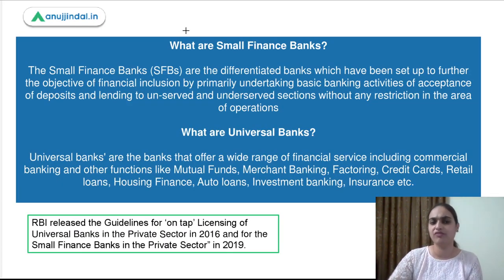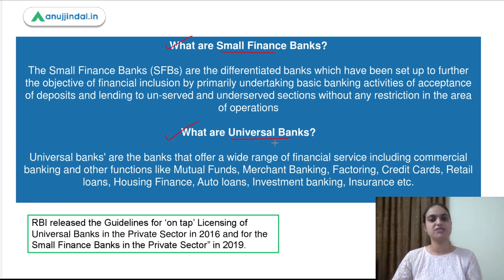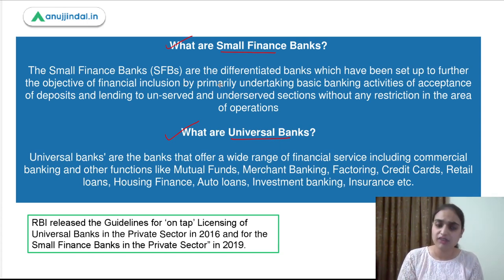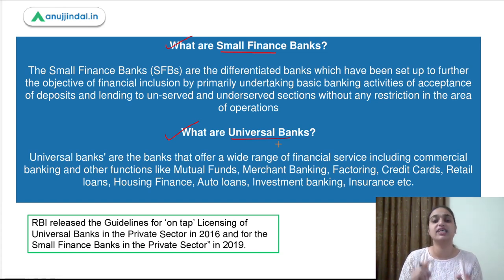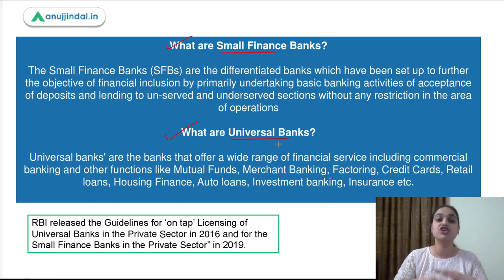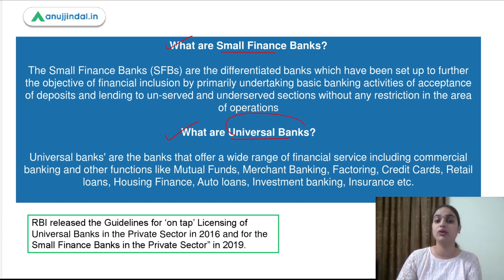Now let's talk a bit about small finance banks and universal banks. Small finance banks are like other banks which help in promoting the objective of financial inclusion — they help underserved or unserved sections of society and carry out various banking businesses like accepting deposits and providing lending. Universal banks, on the other hand, offer numerous financial services altogether — mutual funds, basic commercial banking services, factoring, credit cards, retail loans, housing finance, investment banking, insurance, and more. These banks are universal in that they universally provide numerous financial services, which is why they have been named universal banks. For example, ICICI is a universal bank because it offers all these services.